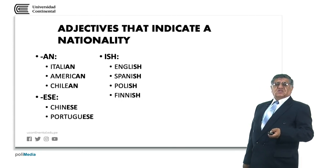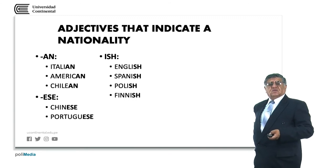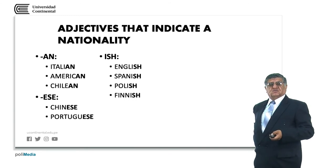Nationality suffixes are very easy: Italian, American, Chilean, Chinese, Portuguese, English, Spanish, Polish, Finnish — these all indicate the nationality of a person.